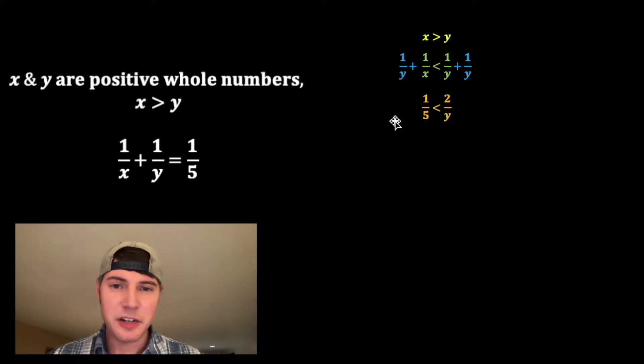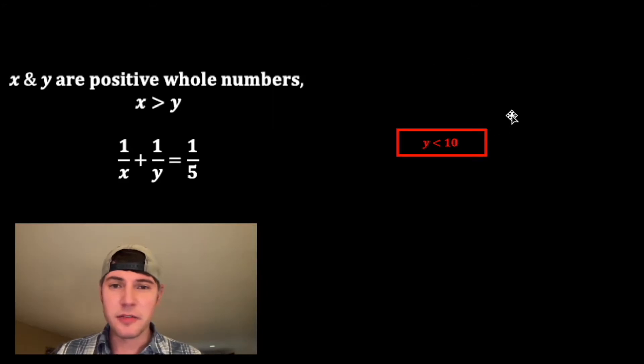Let's get rid of these denominators. So I'm gonna multiply both sides by 5y. Once again, this sign is not gonna change directions because all we're doing is multiplying both sides by a positive number. The reason we know it's a positive number is because x and y have to be positive whole numbers. The 5 cancels with the 5 and the left-hand side is just y. And this y cancels with this y so the right-hand side is just 10. So we know that y has to be less than 10. This is important. Let's put a box around it.